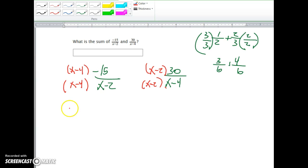So here we distribute: we get -15x, and -15 times -4 gives us plus 60. That's over (x-2) times (x-4).